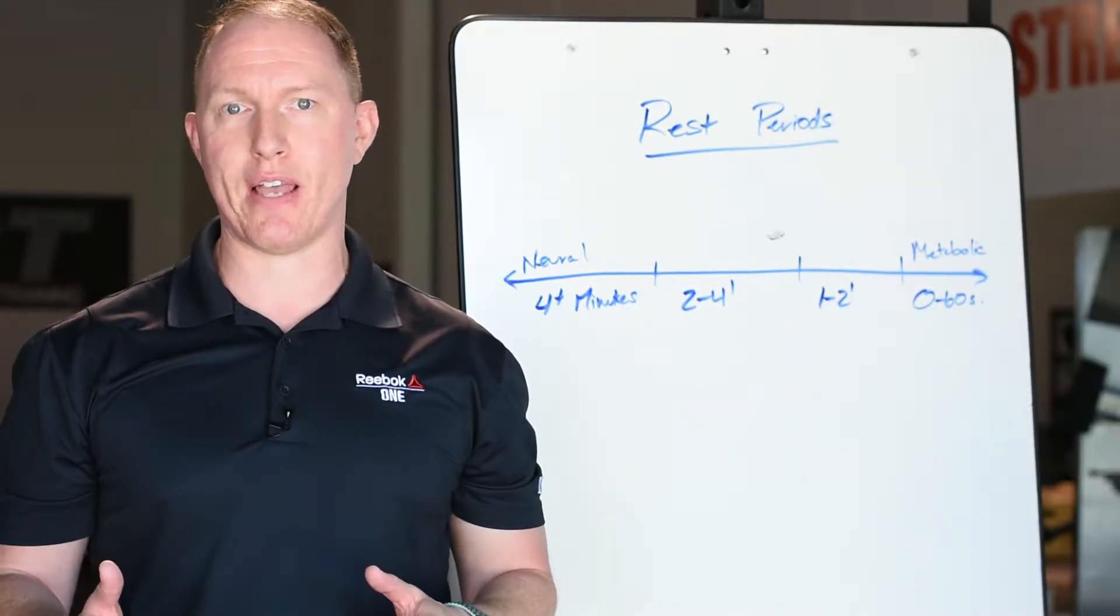Famed sprint coach Charlie Francis says that the nervous system takes at least five to six times as long to recover as the metabolic system, if not upwards of 10 to 20 times as long.